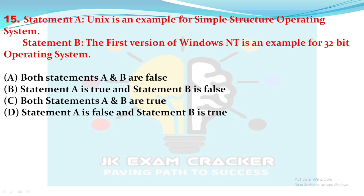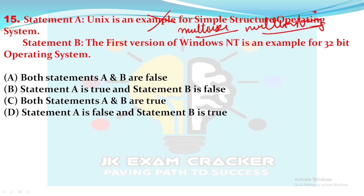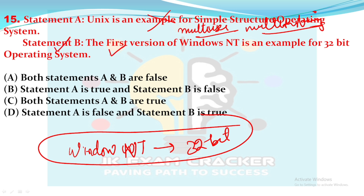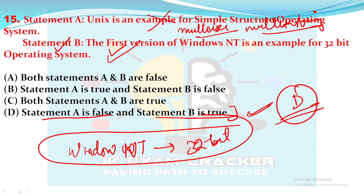Last question of this session — students have two statements to evaluate. Statement A: Unix is an example of a simple structure operating system. This is FALSE — Unix is a multi-user, multi-tasking, complex operating system, not a single structure or single-user OS. Statement B: the first version of Windows NT is an example of a 32-bit operating system. This is TRUE. So Statement A is false and Statement B is true — Option B is the answer. All the best and thank you, students!